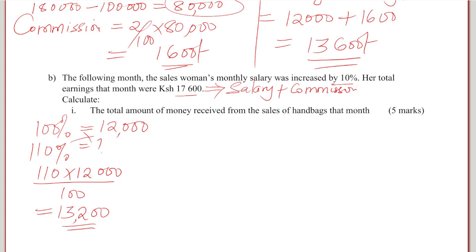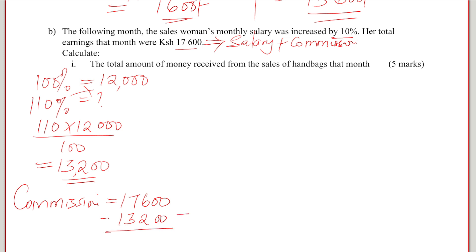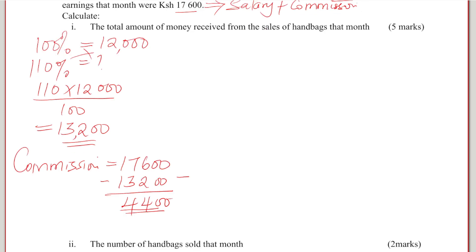Now, since we want to get the sales and the commission from the sales, we are going to take the total earnings of $17,600. Because it is inclusive of the salary and the commission, we subtract the salary to get the commission. So to get the commission, we take $17,600 minus $13,200, and whatever we are left with is $4,400. This will be the commission.